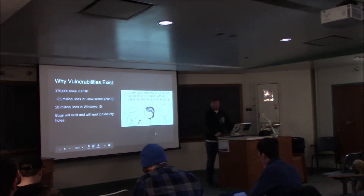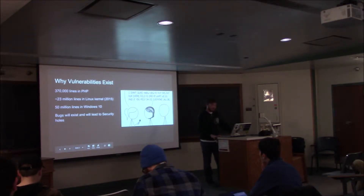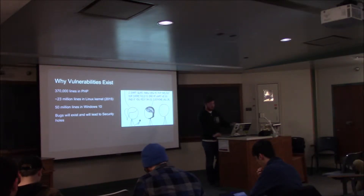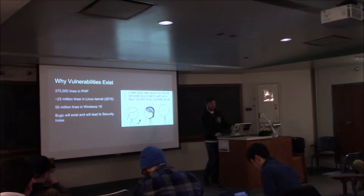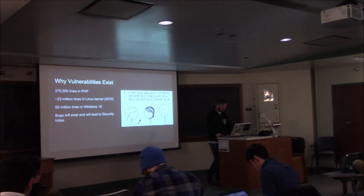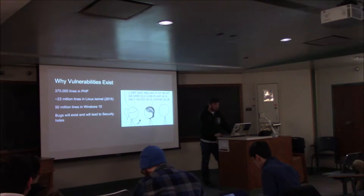The reason vulnerabilities exist is mainly because there is a lot of source code for things we run. For example, PHP — just the base PHP interpreter — is 370,000 lines of source code, not including popular add-ons like PHP Apache or PHP MySQL, which can probably bump most PHP instances to at least half a million. Bigger examples are the Linux kernel, which as of 2015 is 23 million lines of source code — and that's just the kernel.